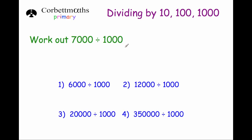Finally, let's look at dividing by 1,000. If the numbers end in three zeros or more, we can divide by 1,000 very quickly. 7,000 divided by 1,000 is 7, 6,000 divided by 1,000 is 6, 12,000 divided by 1,000 is 12, 20,000 divided by 1,000 is 20, and 350,000 divided by 1,000 is 350 — just take off three zeros each time. We could use the bus shelter method, but the shortcut is much quicker.